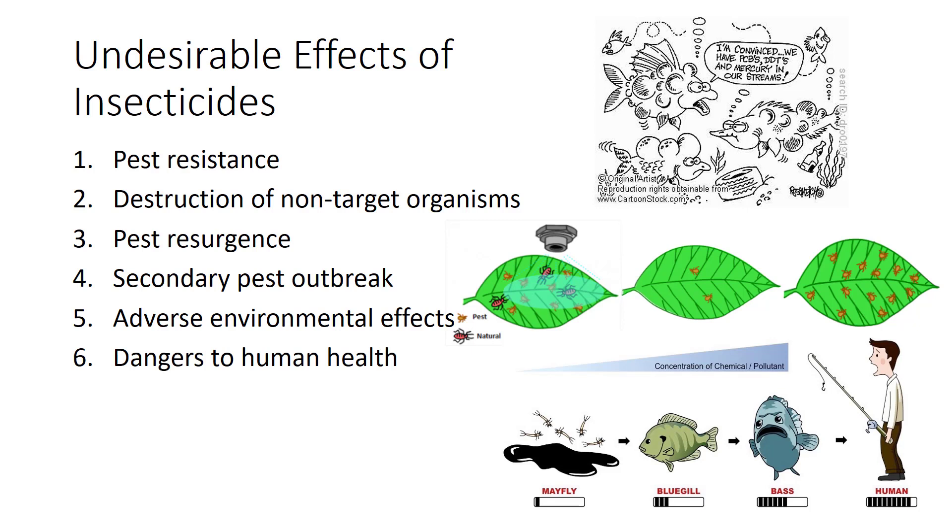A dramatic increase in numbers of the targeted pests can occur. For example, severe outbreaks of cottony cushion scale as a result of DDT use in California in the 1940s. If the natural enemies recover much more slowly than the pest population, the pests can be greater in number than before the insecticide treatment.